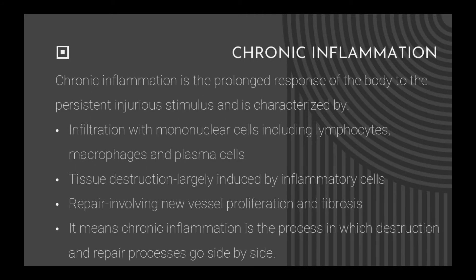Chronic inflammation is the prolonged response of the body to the persistent injurious stimulus and is characterized by infiltration with mononuclear cells including lymphocytes, macrophages and plasma cells, tissue destruction largely induced by inflammatory cells, and repair involving new vessel proliferation and fibrosis. This means chronic inflammation is the process in which destruction and repair processes go side by side.